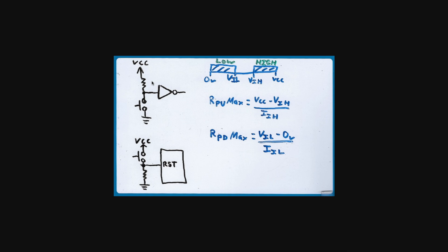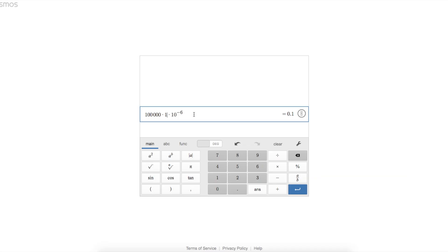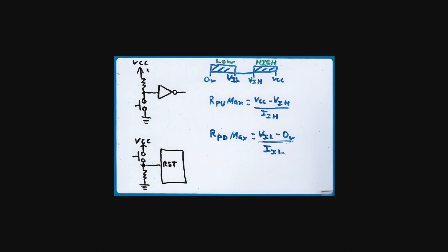We can also use anything lower, and 100k is a common value used on CMOS. So if we use 100k as a pull-up, we have a 0.1 volt drop across that resistor. So if this is 5 volts VCC, we have 4.9 volts on our logic high with this 100k pull-up.